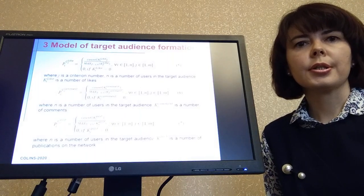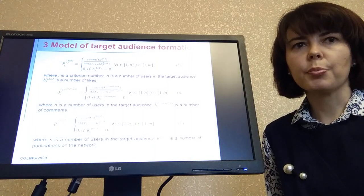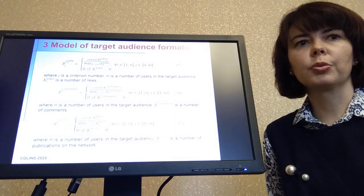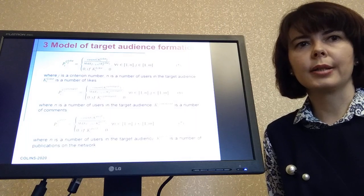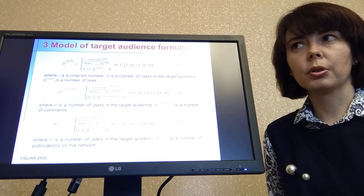For each criteria, a relative rating is evaluated based on the following indicators: the number of likes, comments, and posts that the user has left. Ratings are estimated by formulas 5 through 7.